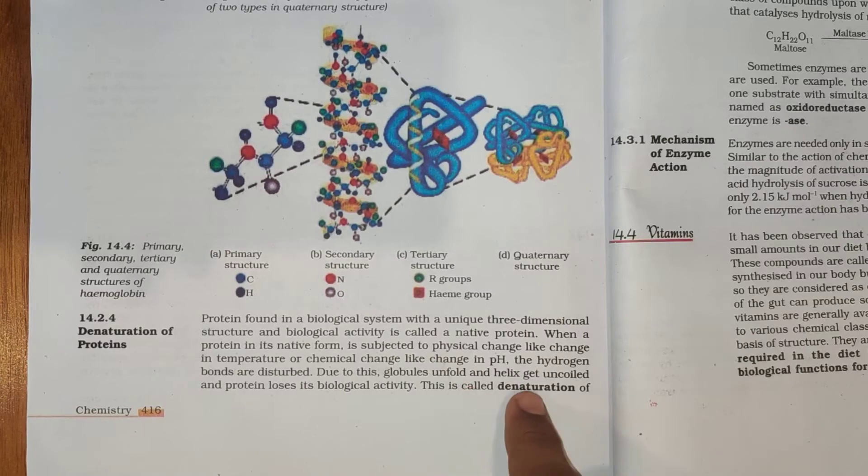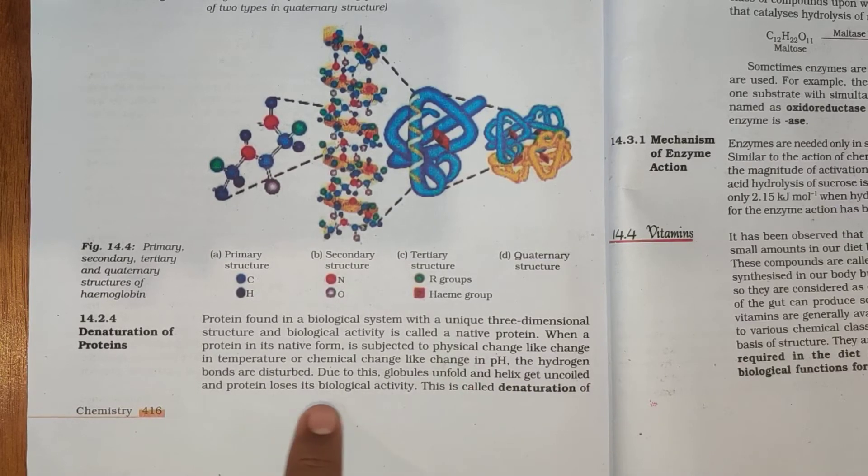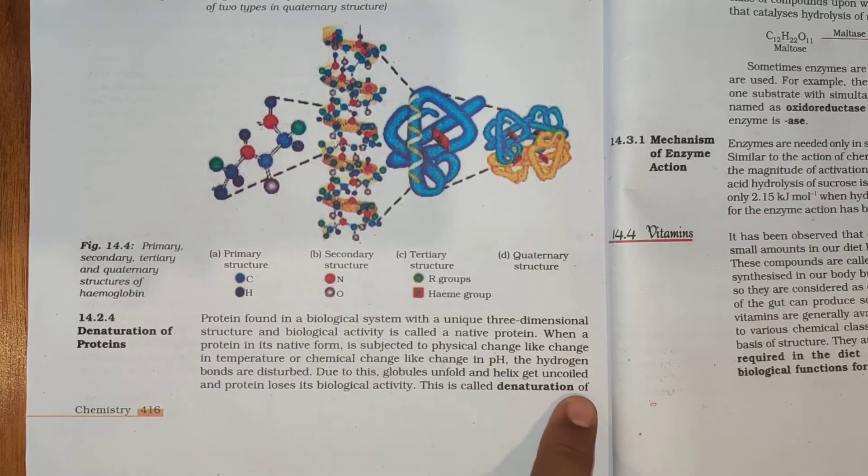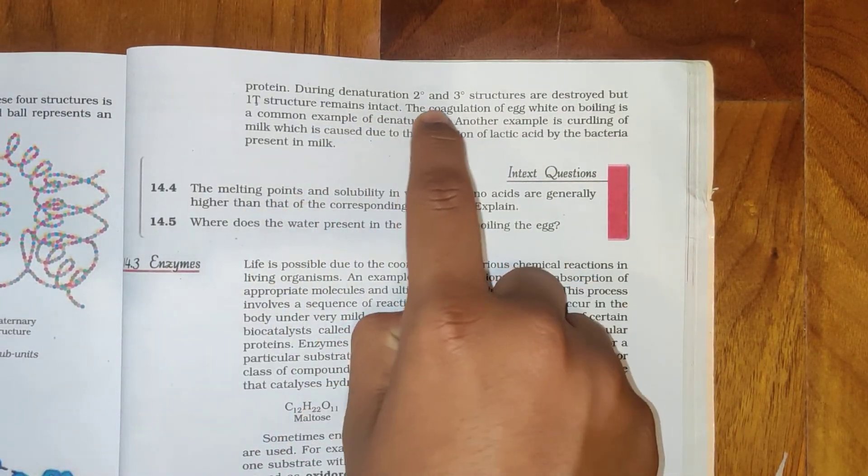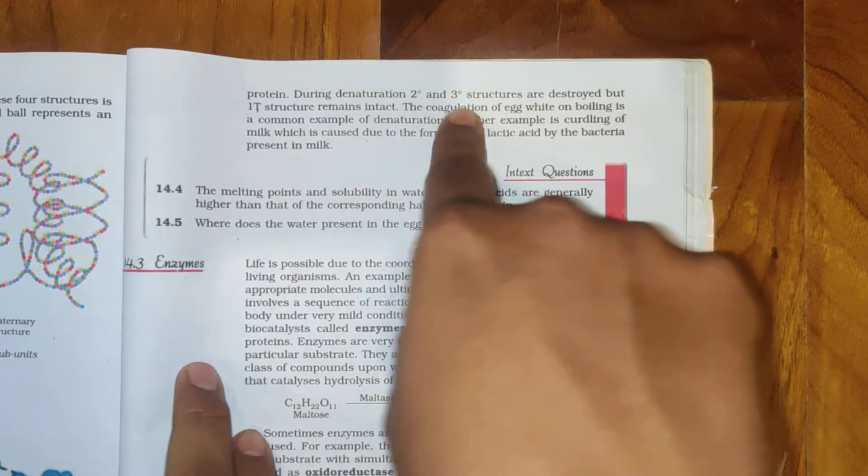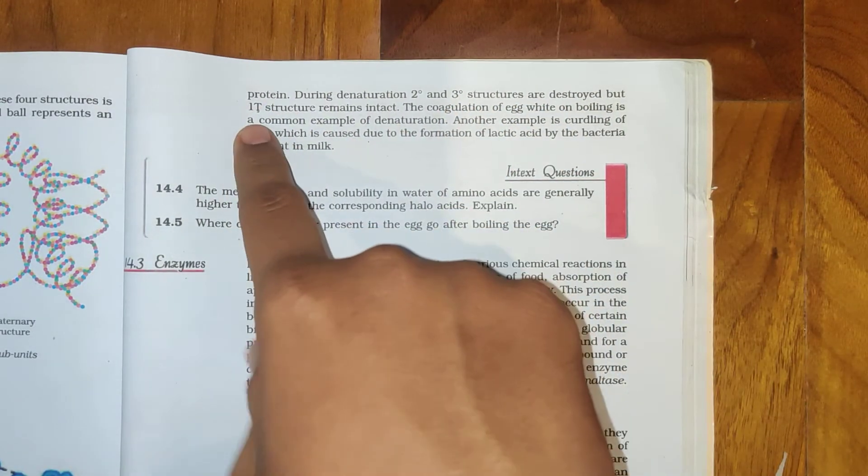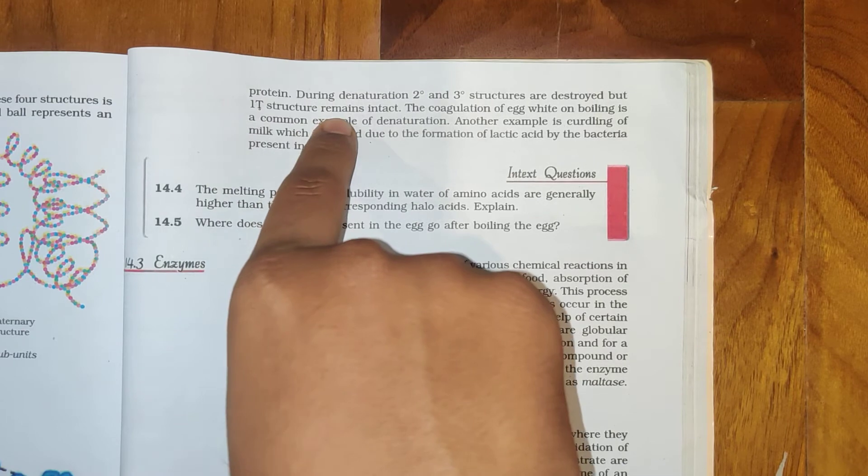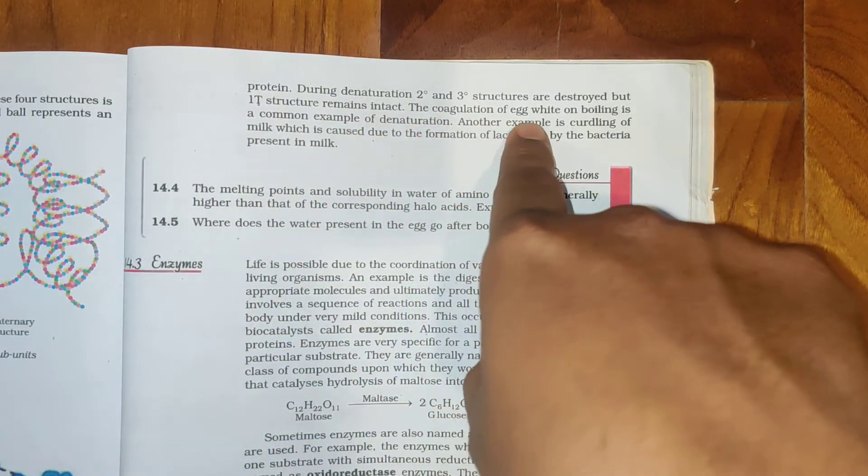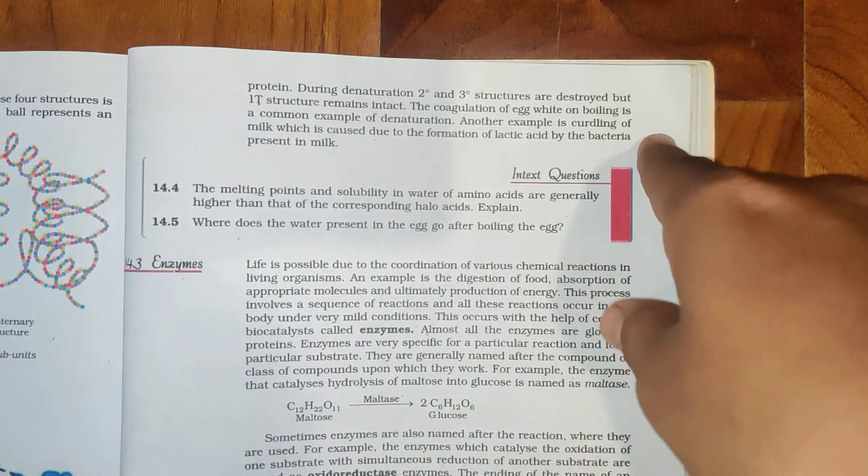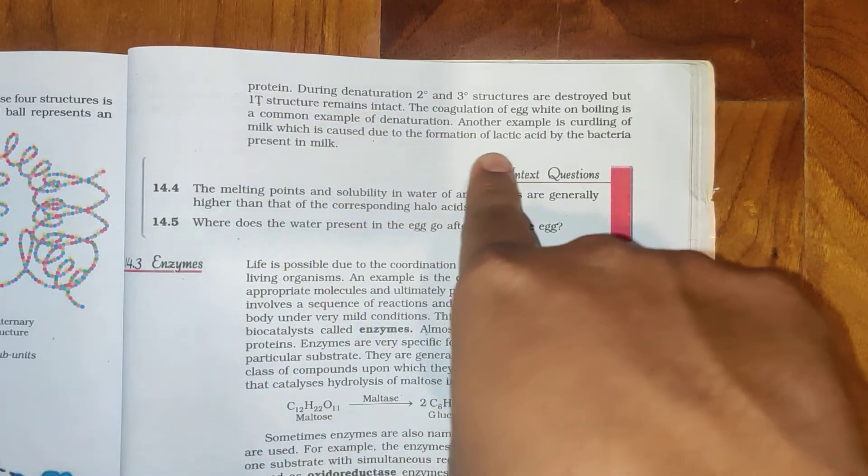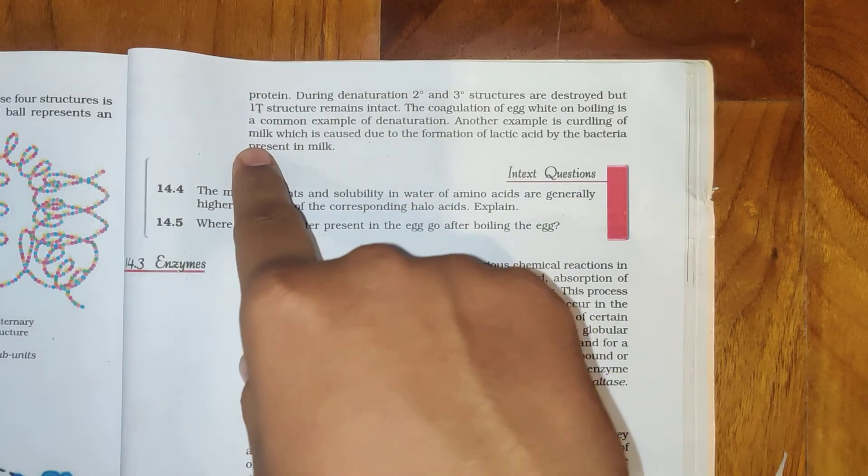Due to this, globules unfold and helix get uncoiled and protein loses its biological activity. This is called denaturation of protein. During denaturation, two degree and three degree structures are destroyed but one T structure remains intact. The coagulation of egg white on boiling is a common example of denaturation. Another example is curdling of milk which is caused due to formation of lactic acid by the bacteria present in the milk.